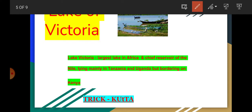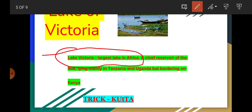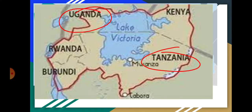Lake Victoria is the largest lake in Africa. The longest river, the Nile, originates from Lake Victoria. The majority of this lake lies in Tanzania and Uganda, but Kenya also shares a very small border — you can have a look at the map.